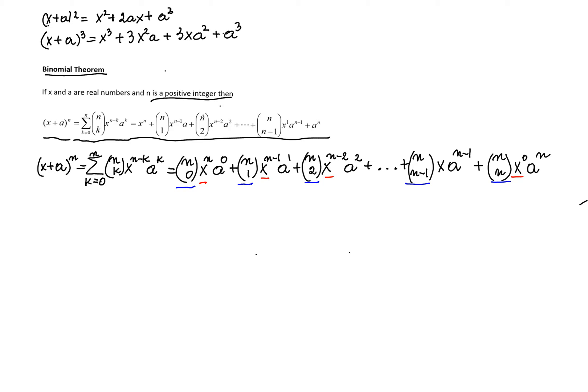Then if you look at the powers of a, you can see that a appears in each term, but the powers of a are 0 also, then in the next term we have 1, 2, n minus 1, n. So the powers of a are increasing from 0 to n.